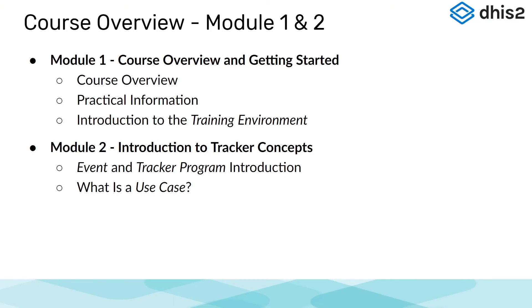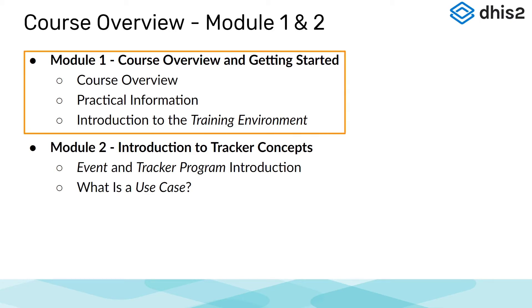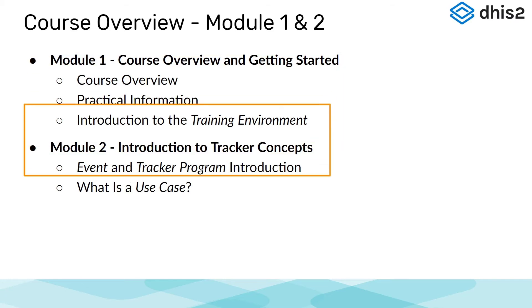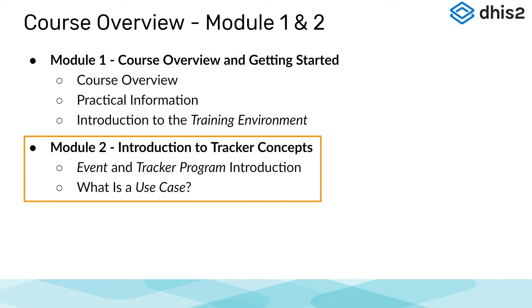Now let's take a look at the key elements of each individual module. In Module 1, first we will review the course as a whole, including covering some practical information before we introduce the training environment itself. Next, in Module 2, we will introduce tracker concepts through an initial presentation, reviewing both event and tracker programs. In this module, we will also provide an explanation of a use case and how it applies both more broadly to DHIS2 as well as within this course.